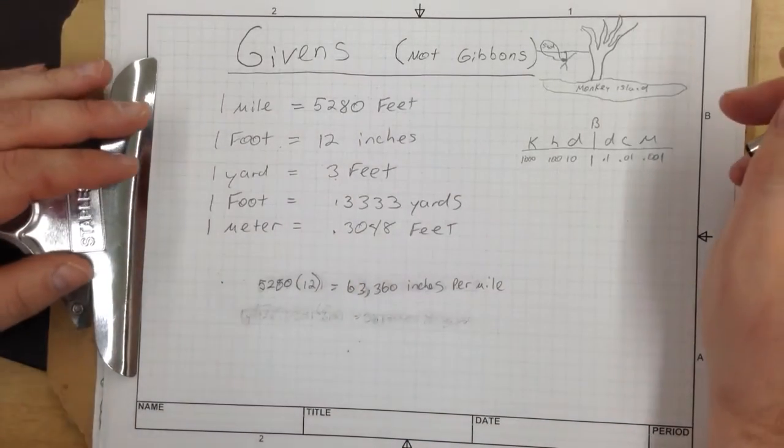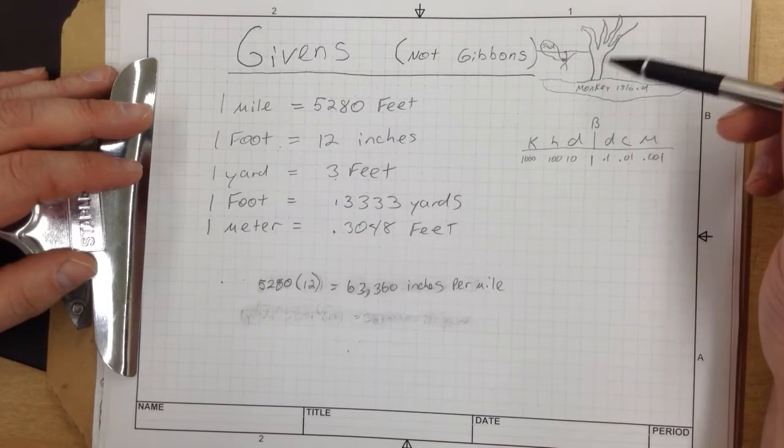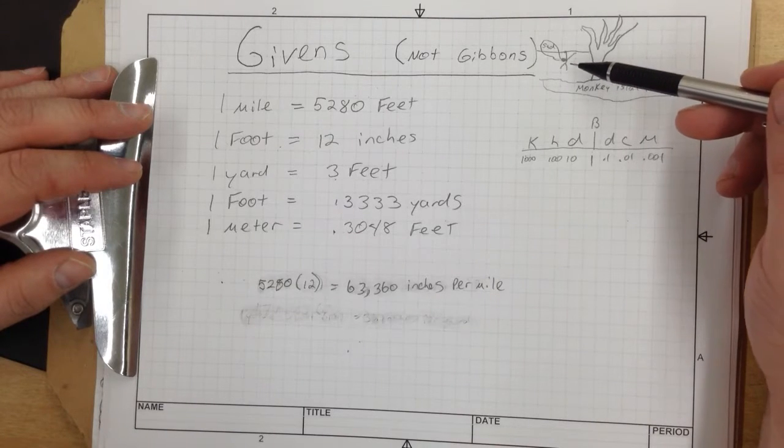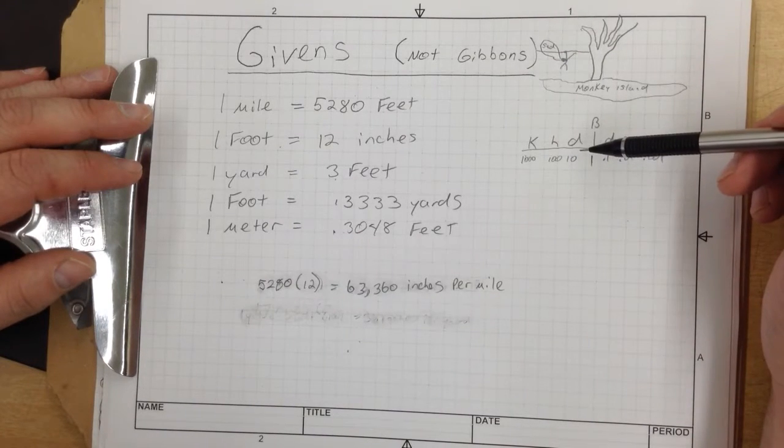Okay, let's talk a little bit about some givens. Now notice I'm not talking about gibbons. Gibbon is a type of monkey and he is sad because we're not talking about gibbons today. We are talking about givens.